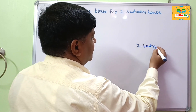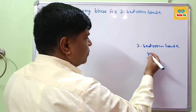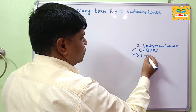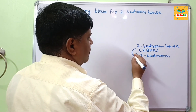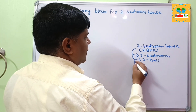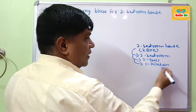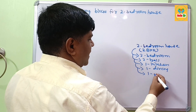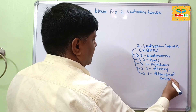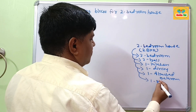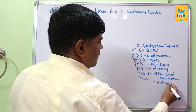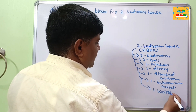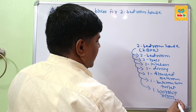A two-bedroom house is also called a two BHK house. It contains two bedrooms, two halls, one kitchen, one dining area, one attached bathroom, one bathroom with toilet, one worship room, and a circulating area for passages.